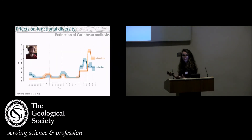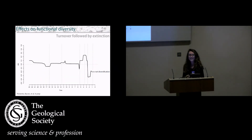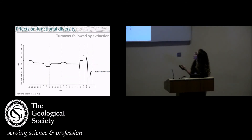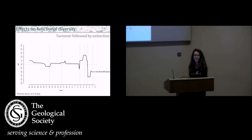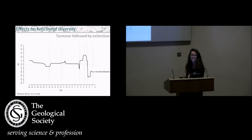We found high extinction in the Plio-Pleistocene and Pleistocene, but also a lot of origination. When we look at a net diversification curve, we find a lot of diversity in the Pliocene, but then a dramatic drop during the Quaternary. We interpret this as a lot of turnover in the Pliocene where there was positive diversification followed by an extinction event.